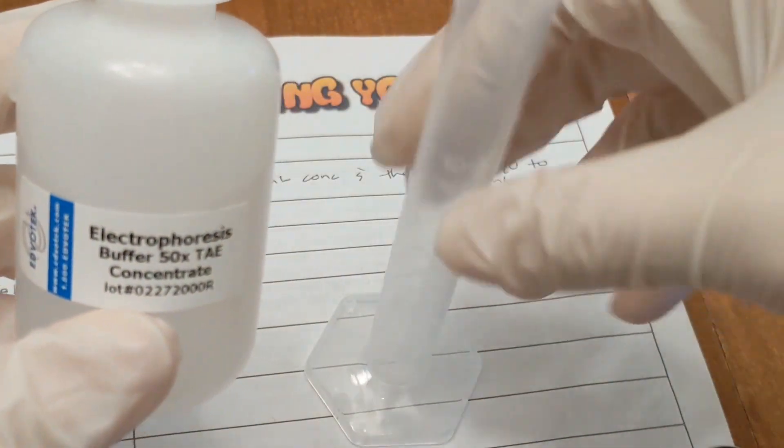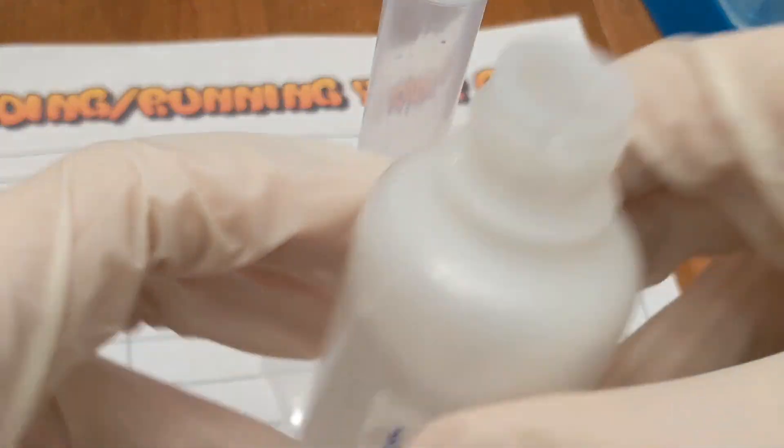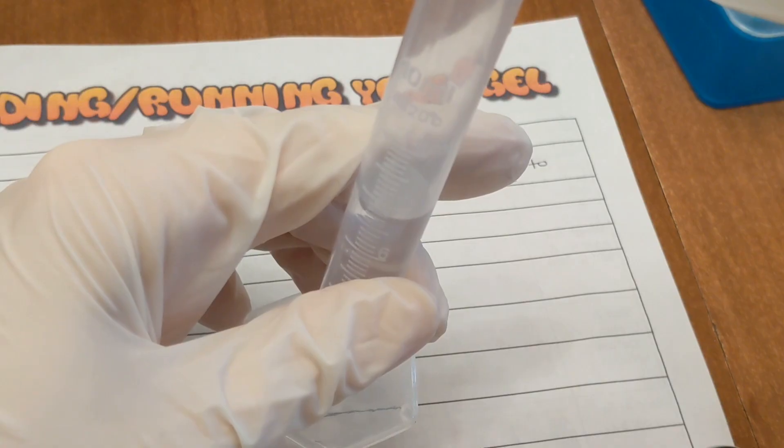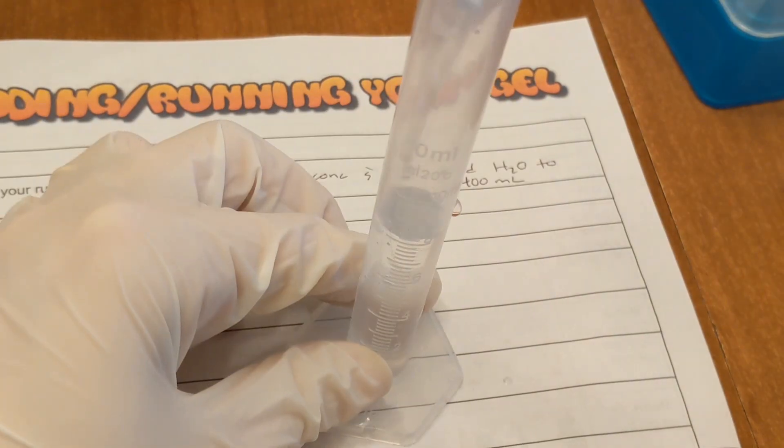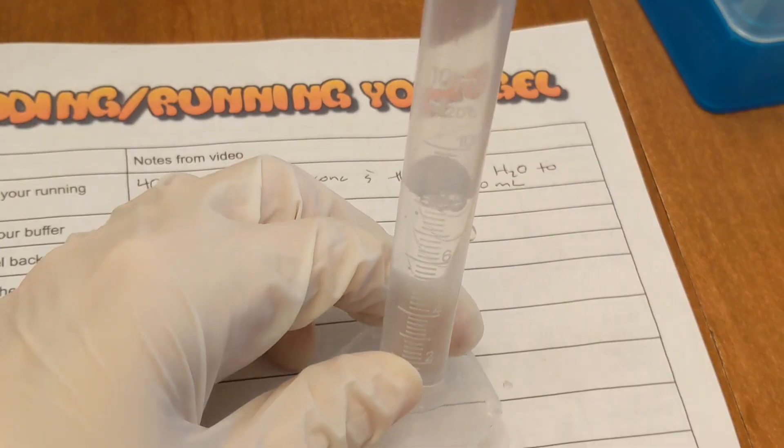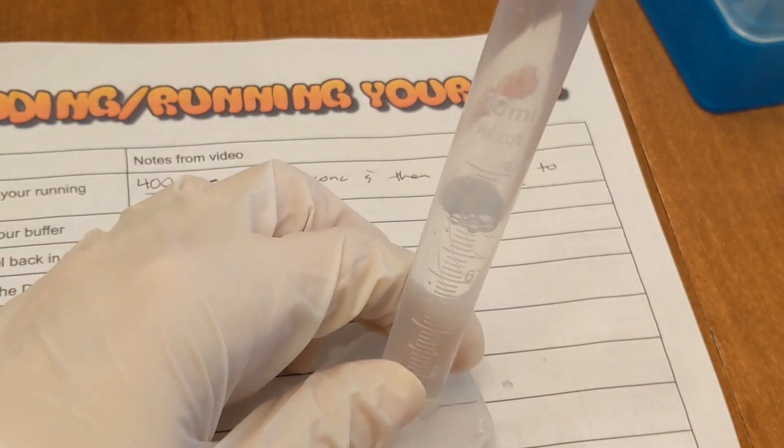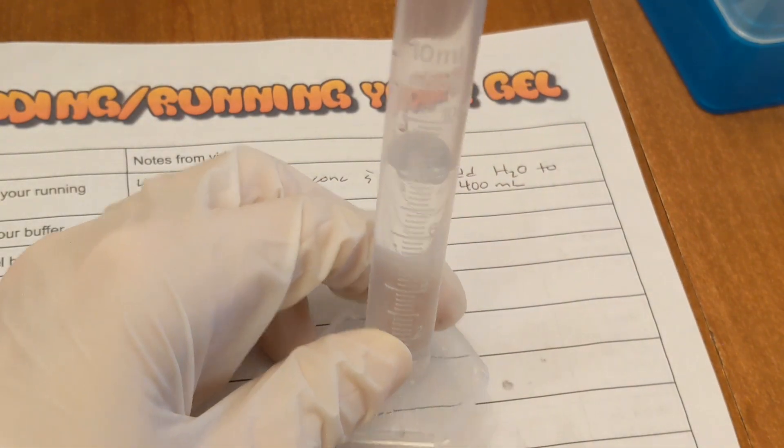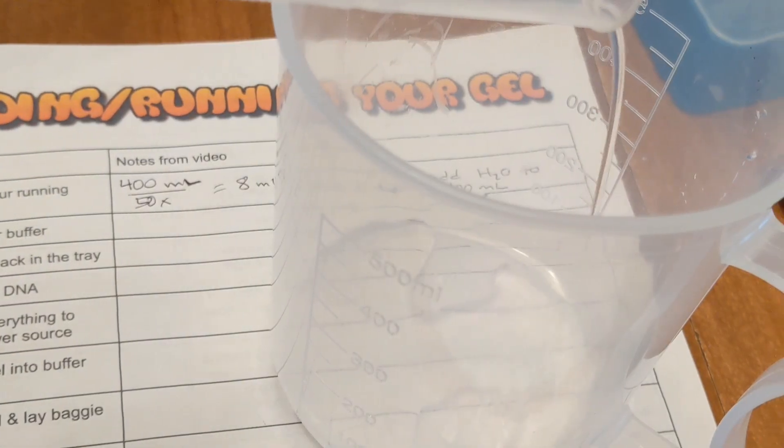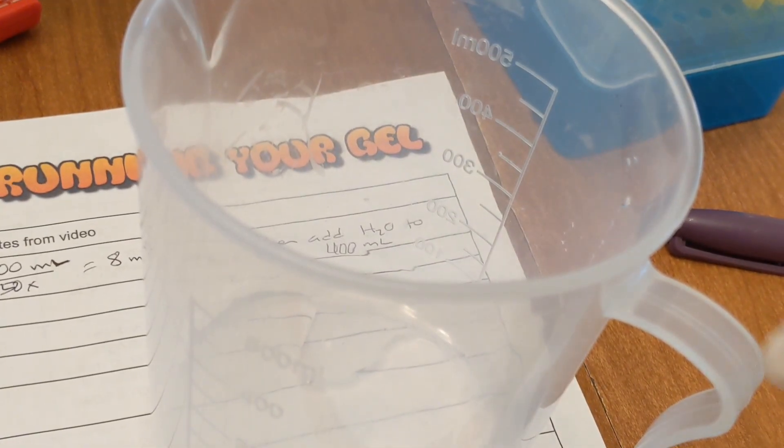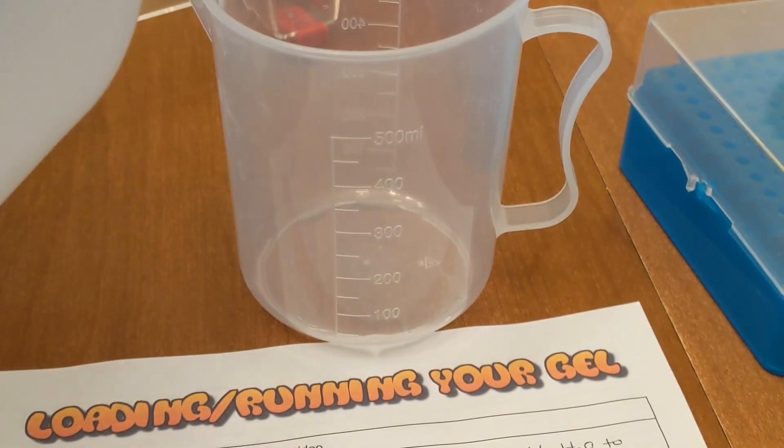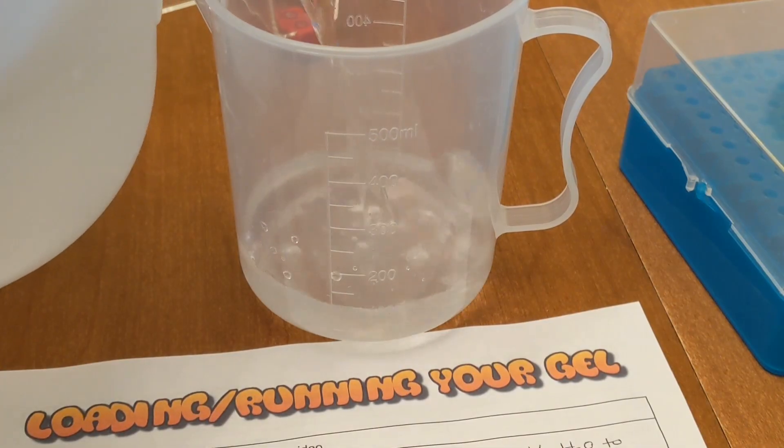We start with our concentrate and then we add water to make up the difference. So use your 50x TAE concentrate. You could use a graduated pipette to get to 8 or you can do this and if you're not quite there you can just use a pipette to adjust it to get to 8. Then you're going to dump that into your large beaker. Once our buffer's in our large beaker go ahead and add the distilled water until we reach the 400 line.